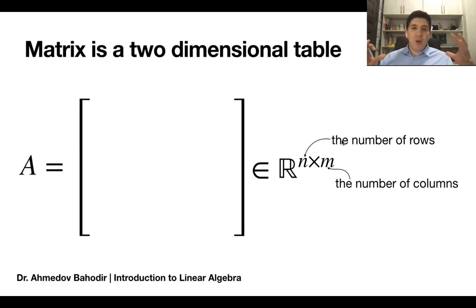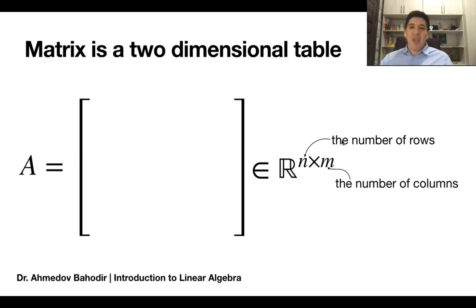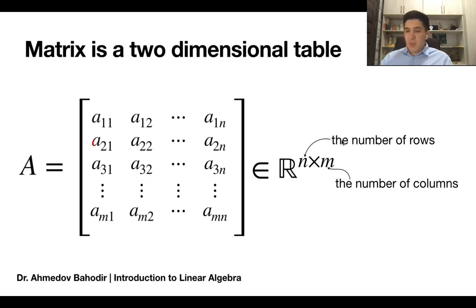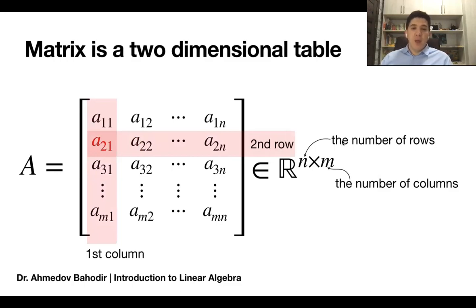Inside a matrix we obviously have n times m elements. For a two-by-two matrix there are four elements, and every element inside the matrix has its own coordinate — its own location. If your matrix is n by m, every single element has a coordinate. For example, a_{3,2} means the element at the third row in the second column, and a_{2,1} means the element at the second row and first column.